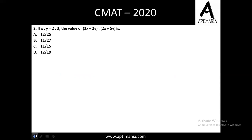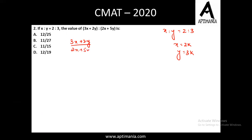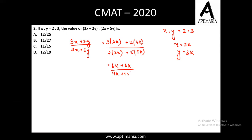Let's go ahead for the next question. Question number 2 is a question based on ratio and proportion. x to y is given as 2 to 3. So I am assuming x = 2k and y = 3k. Putting the value of x and y in the given expression, it will be (3×2k + 2×3k) / (2×2k + 5×3k), which is (6k + 6k) / (4k + 15k), that is 12k / 19k. The k's cancel out, so we'll have the answer as 12/19. The correct answer for question number 2 is option D, that is 12/19.